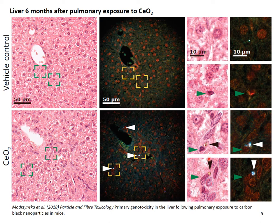Also, if you see this high magnification brightfield, then you can actually see the particle agglomerate. And if you are experienced in histology, based on these standard hematoxylin and eosin stains, you can identify which cell types are interacting with your nanomaterials.